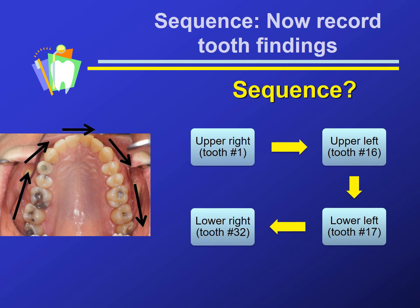Then we drop down to the lower left quadrant. This is because our finger rests, our lighting, and our positioning are already in place for further inspection of the left side. Then continue in numerical order to the lower right.